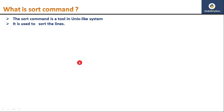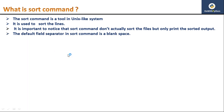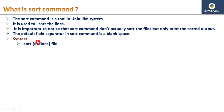One important point to notice: whenever you do a sort operation on your text file, it won't modify your existing text file. The output will be printed on your stdout — on your terminal, on your command line. The sort command won't change the original data; it will only print the output on stdout. The default field separator in sort command is a blank space. The default syntax is: sort [options] file, where options are optional.